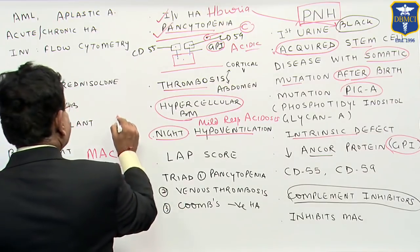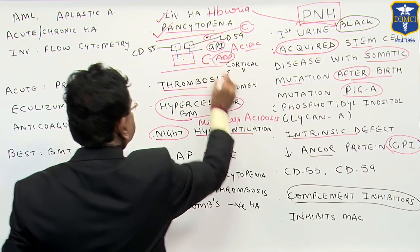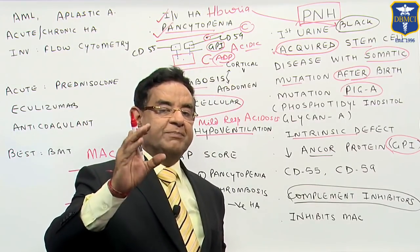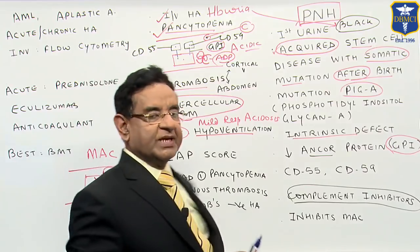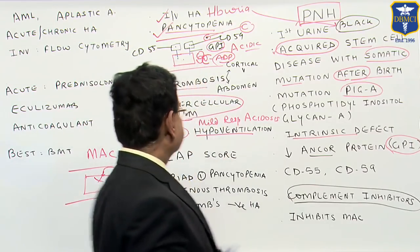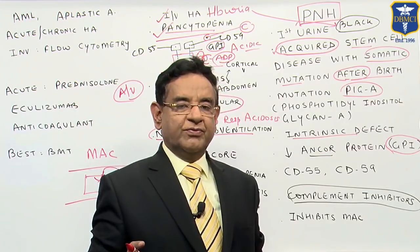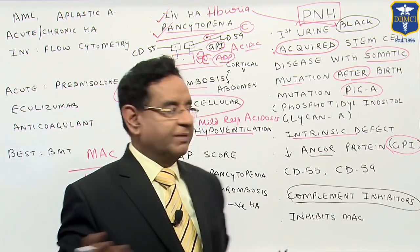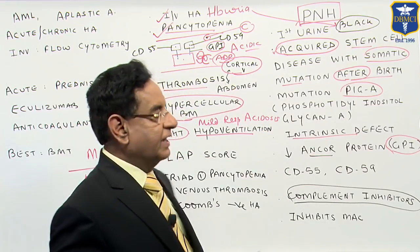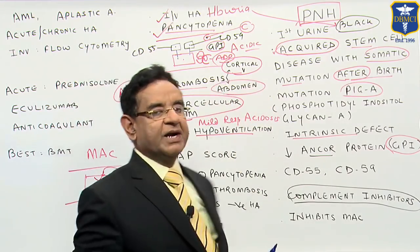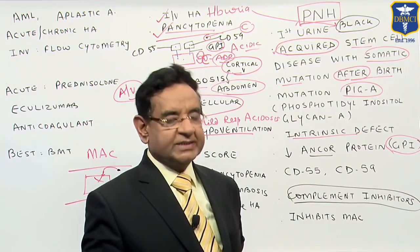Why does increased clot form? When the platelets are broken down, they cause release of ADP. ADP is a platelet aggregator, so that leads to aggregation of other platelets that are not yet broken, leading to clot formation. This clot can occur in both arteries and veins. Because of venous clot formation, the most common cause of death in this patient is cortical vein thrombosis. Abdominal pain can occur due to arterial involvement in the abdomen. Venous clotting is much more common compared to arterial.